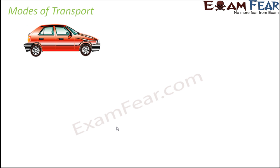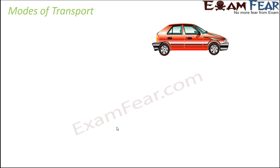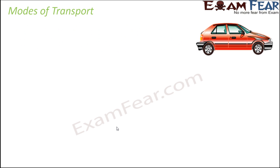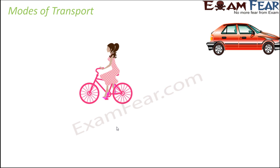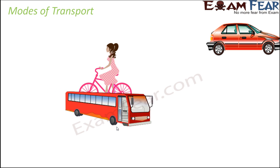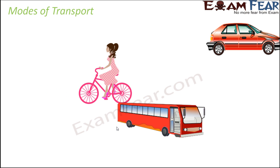To cover distances, some object has to be in motion. These objects could be means of transportation — for example, a car, a cycle, or a bus where multiple people can cover a large distance. There are many different modes of transport and forms of vehicle used to cover distances.